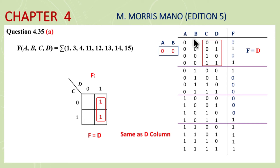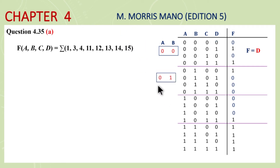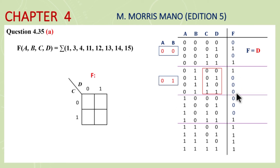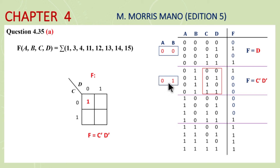Next, for this group whose select line AB is zero-one: for select line zero-one, you need F as a function of C and D. Use a two-variable map. F is needed at zero-zero only. So in the two-variable problem for this group, F = C' D'. There is only one minterm and its minterm expression is C' D'. So for the group in which AB is zero-one, F in the form of CD is C' D'.